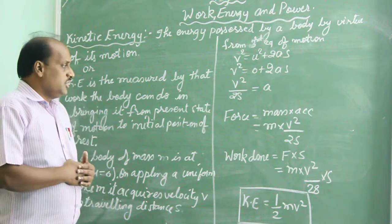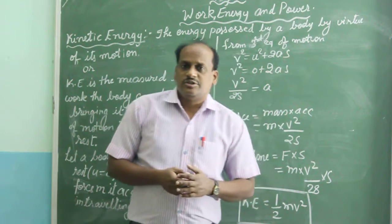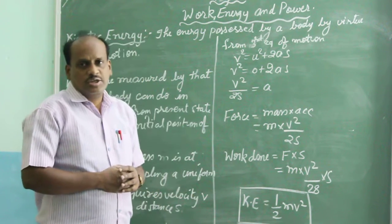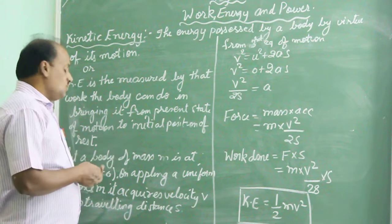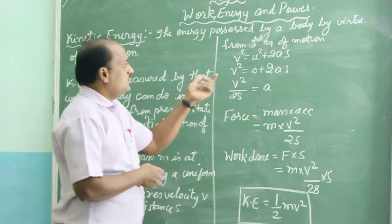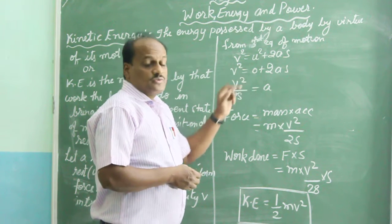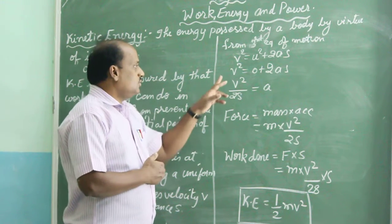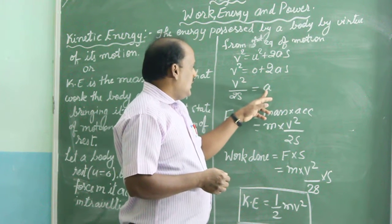So from third equation of motion, you know that third equation of motion is v² = u² + 2as. Since the body is at rest, so u will be equal to zero. So we'll substitute here, u² that is, in place of u will substitute zero since body is in rest. So we get v² = 2as, or a = v²/2s.